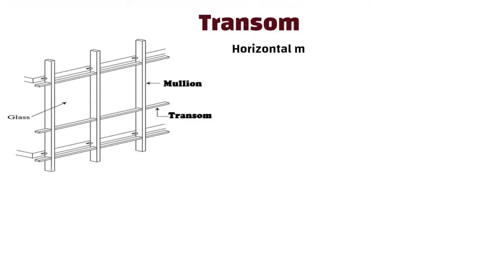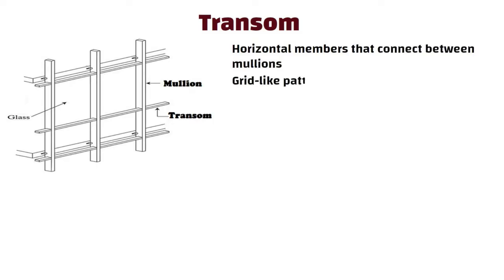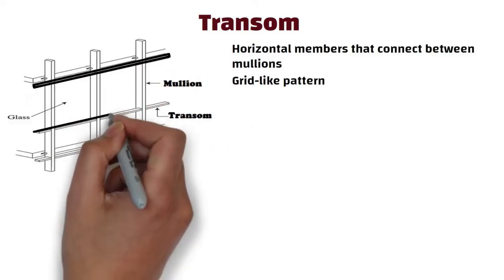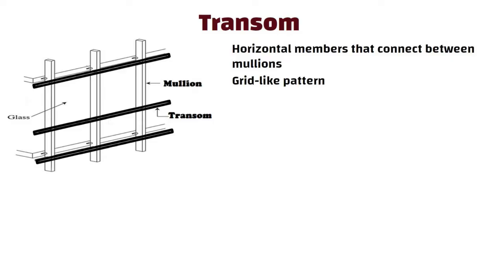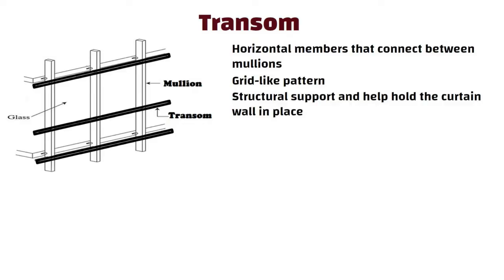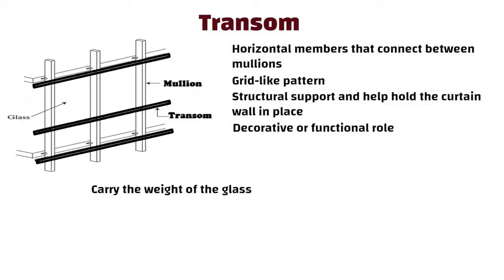Transom. Transoms are horizontal members that connect between mullions, creating a grid-like pattern within the curtain wall. They are like the lines that run side to side on a window. Transoms provide structural support and help hold the curtain wall in place. They can also have a decorative or functional role, as they may carry the weight of the glass or other elements in the facade.